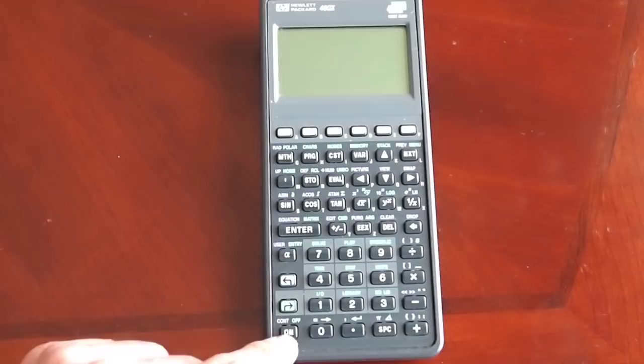I want to demonstrate how I troubleshoot some issues with this calculator. Specifically this button, the on button and the six keys right here.